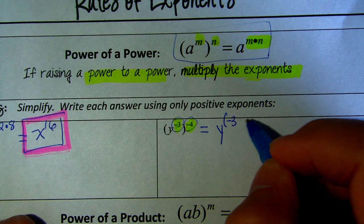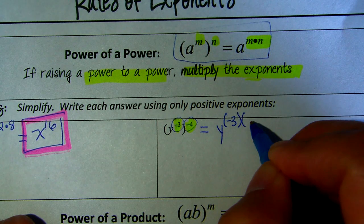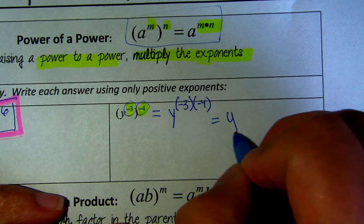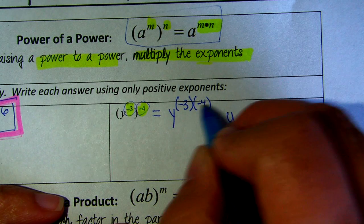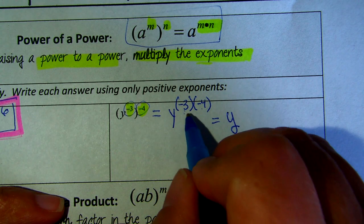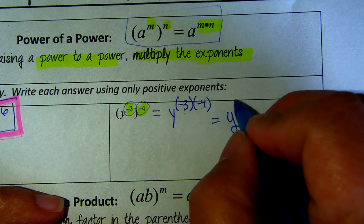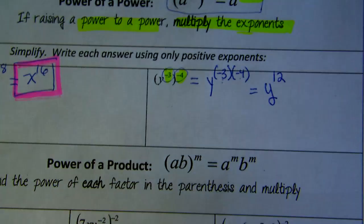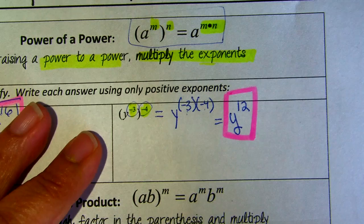We're going to multiply them. Negative 3 times negative 4. So y raised to the power of what? What is the power, what is the result of multiplying negative 3 times negative 4? That will give you positive 12. So, this is your answer.